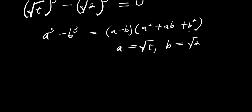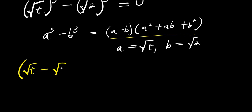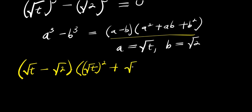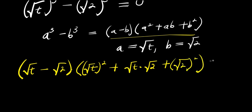Applying that difference of cubes identity here, I have square root of t minus square root of 2, times square root of t raised to the power of 2, plus square root of t times square root of 2, plus square root of 2 raised to the power of 2, all equals 0.